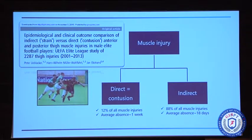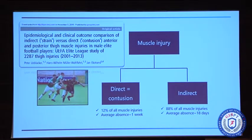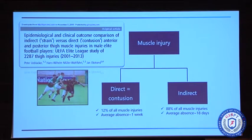The major thing you have to differentiate is between direct and indirect muscle injuries. The direct injuries are the contusions — they don't cause any problems in general. They are few: only 12% of our muscle injuries and they have a short absence, on average about a week. The big problem, as you know, are the indirect muscle injuries — 88% of all muscle injuries — and they cause an average absence of about 18 days, but with a huge differentiation.